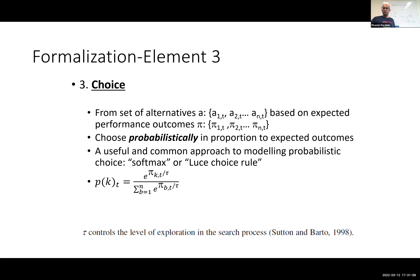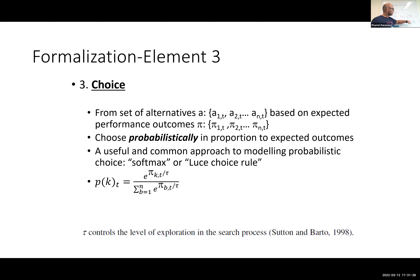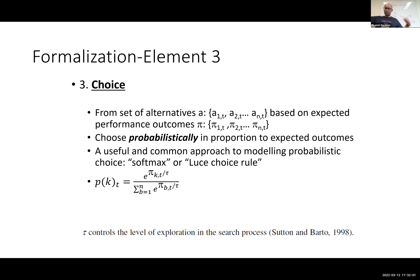Why do we do this? Why exponentiate and why divide by tau rather than just use the values themselves? Exponentiating creates a sigmoidal function — it pulls towards the top and pulls towards the bottom. More importantly, exponentiation converts everything into the positive domain: whether you plug in a positive or negative number, you get a positive number. This avoids problems where a negative and positive expected value would cancel each other out. The tau is really the thing to focus on — it controls the level of exploration in the search process.